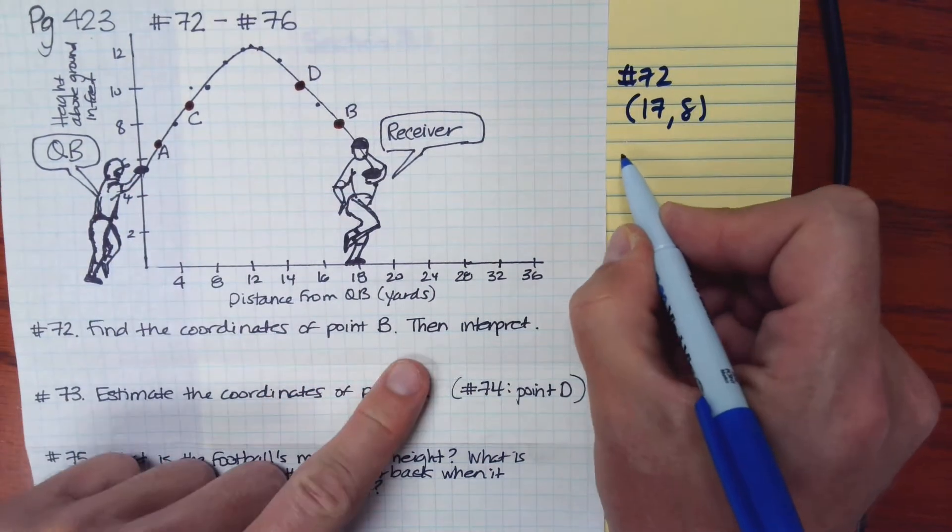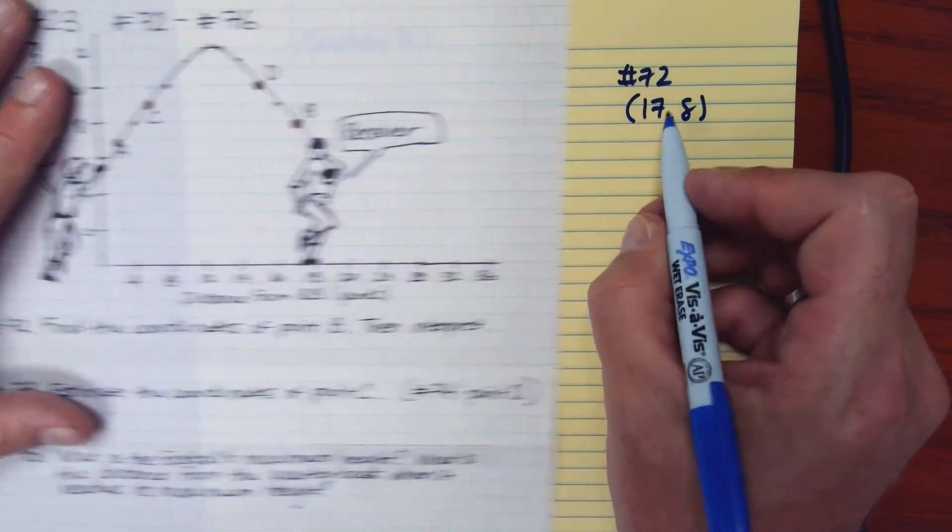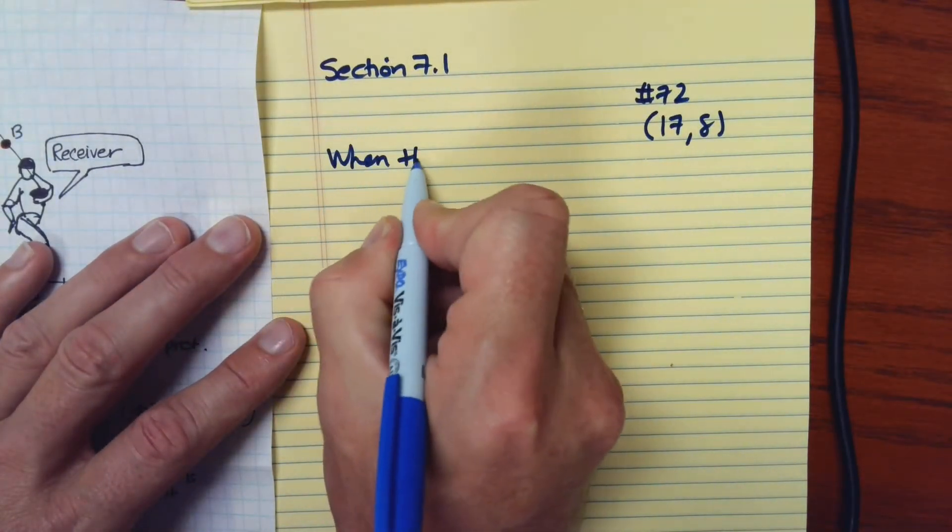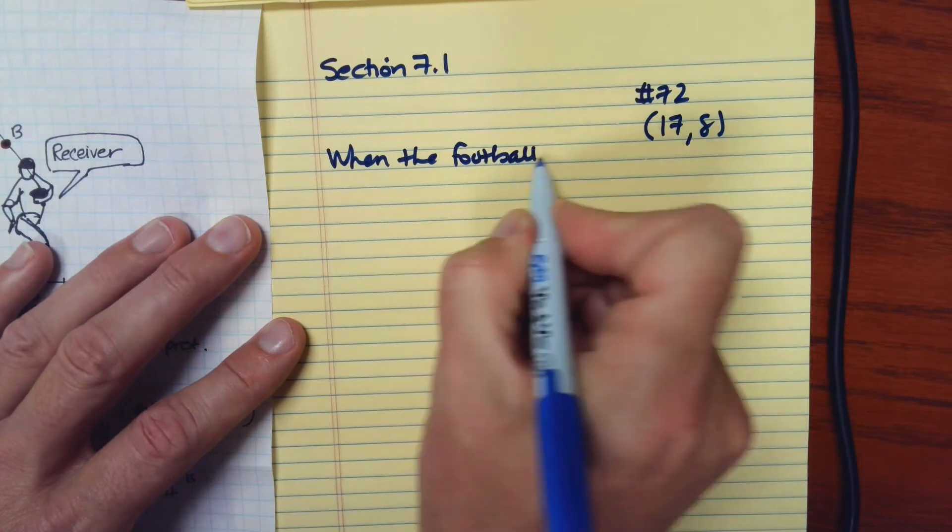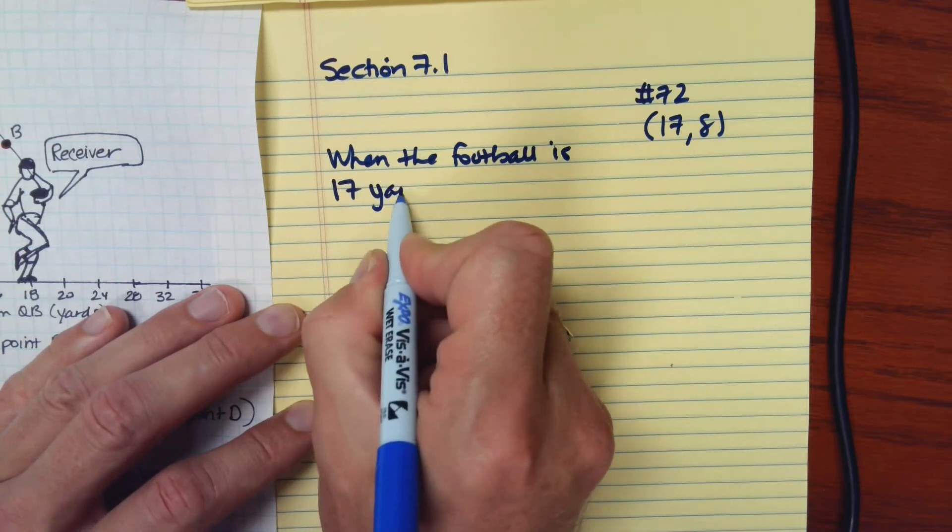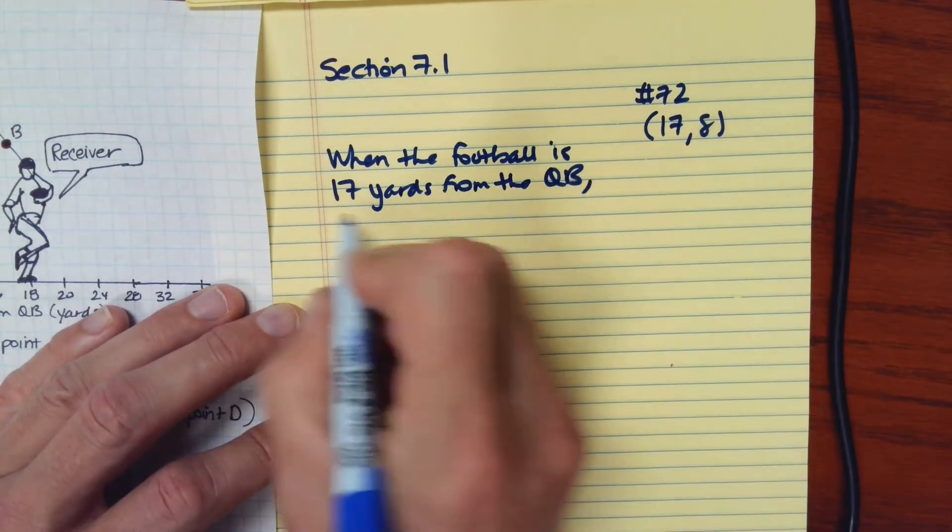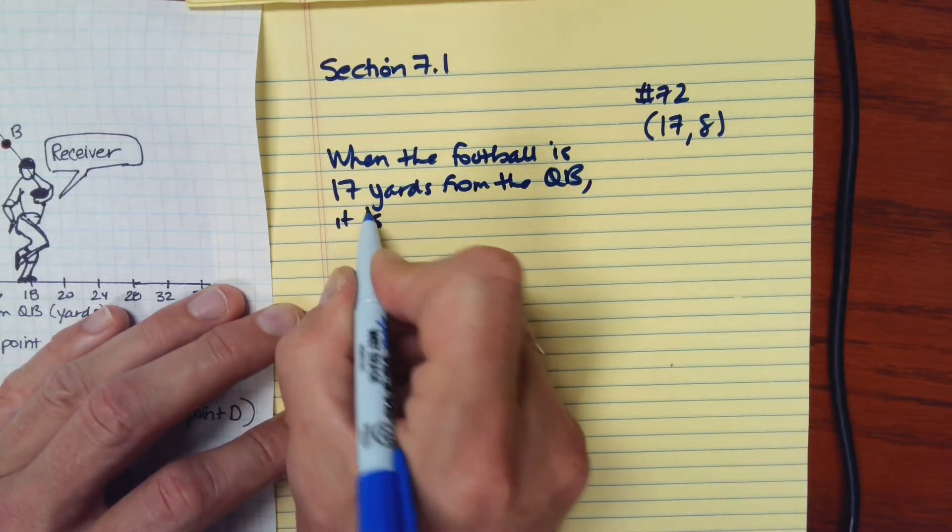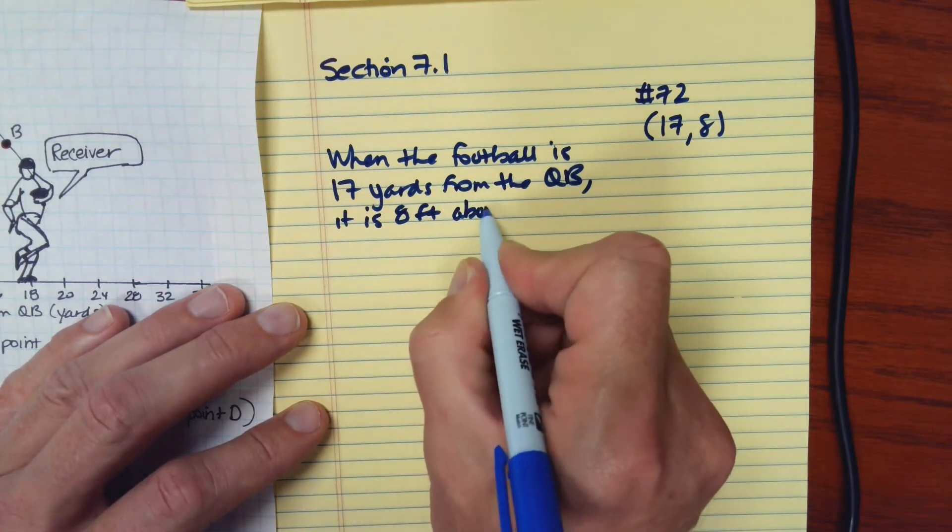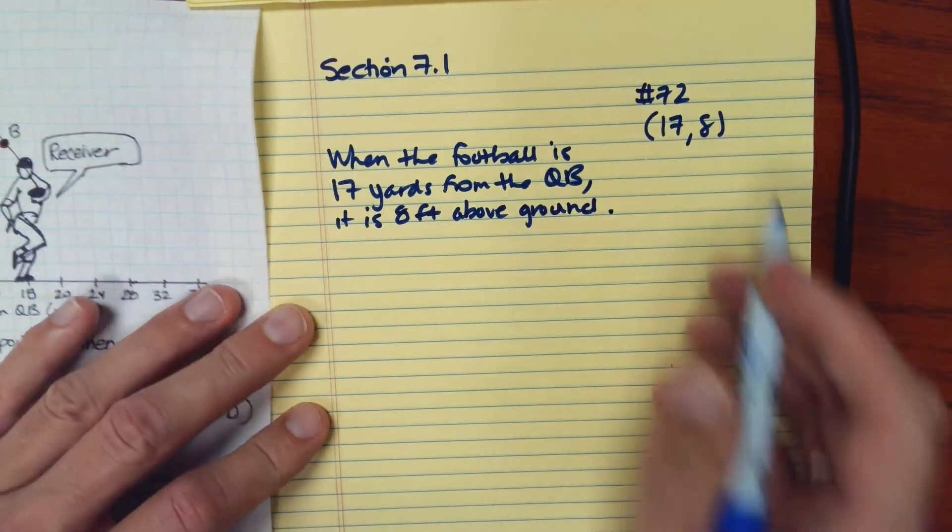So we could say that as far as our interpretation, let's write a complete sentence here, that when the football is 17 yards from the quarterback, it is 8 feet above ground. So that's what these two values mean in this context.